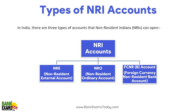Now, types of NRI accounts — which type of NRI bank account can a person open? There are three: NRE (Non-Resident External), NRO (Non-Resident Ordinary), and FCNR (Foreign Currency Non-Resident Bank account). We'll be explaining each and providing a proper comparison table.